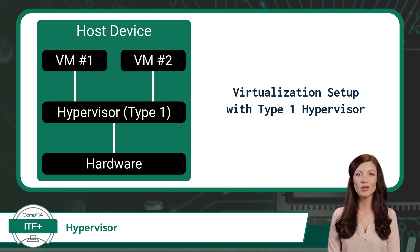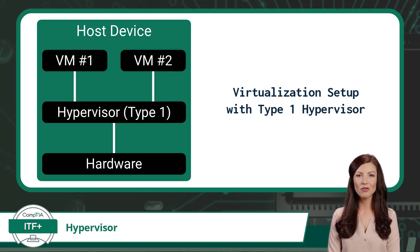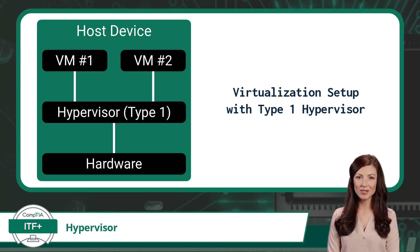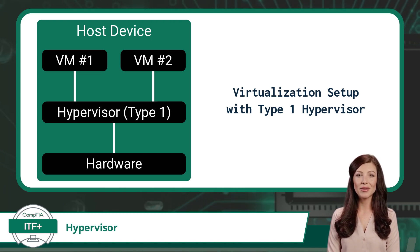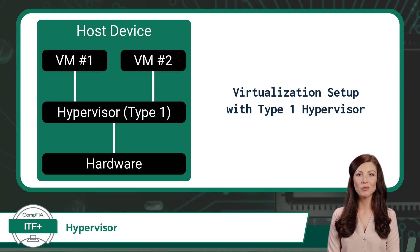With the hypervisor in place, we can now complete our virtualization setup with the installation of virtual machines, or VMs for short. Virtual machines are simulated computer systems created by the hypervisor that allow you to run multiple independent operating systems and applications on a single physical computer simultaneously. Each virtual machine acts as a self-contained, isolated environment, complete with its own virtual hardware and resources, allowing it to run like a separate computing device from within the host device.